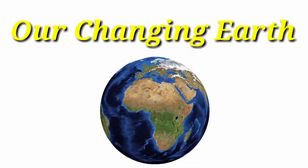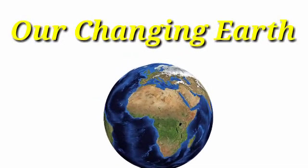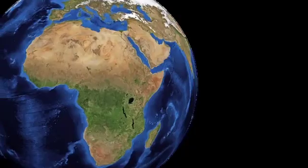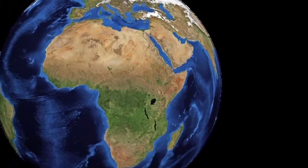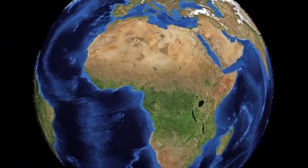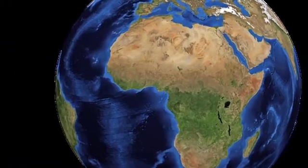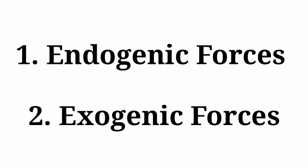Our changing earth — our planet earth is always changing. Do you know why this happens? It happens because of two kinds of forces: the first one is endogenic force and the second is exogenic force. Let's understand the meaning of these terms.